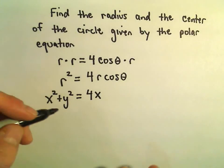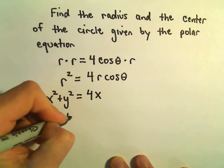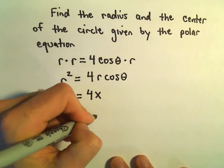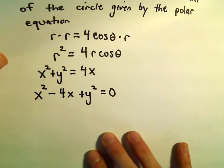And now what we're going to do is make the right side 0. We'll subtract the 4x over. And now we're just going to complete the square.